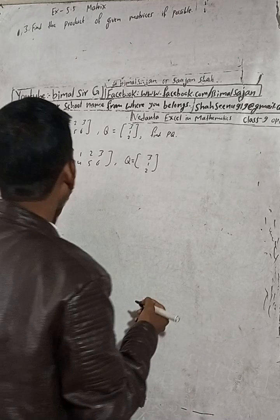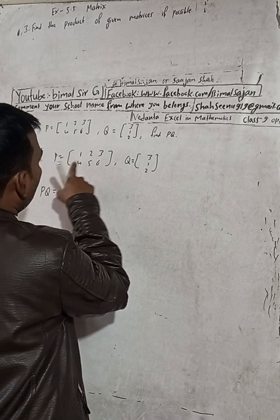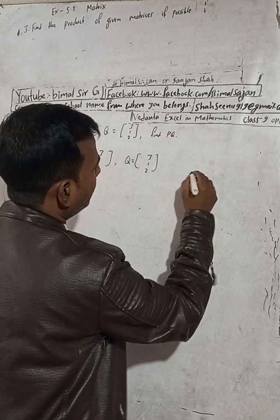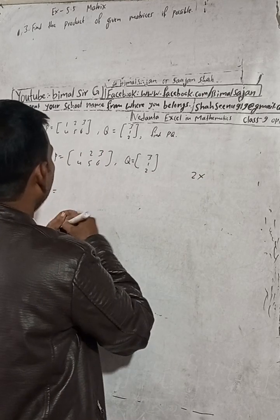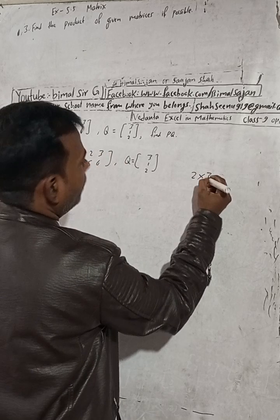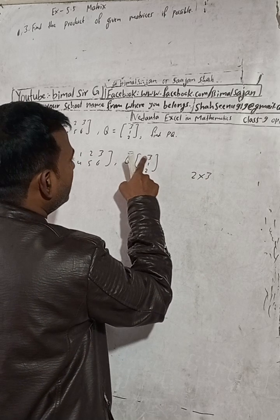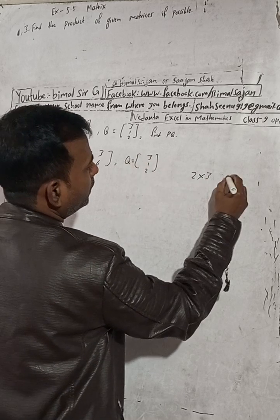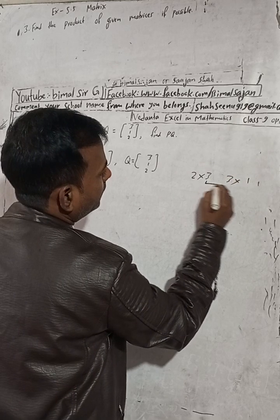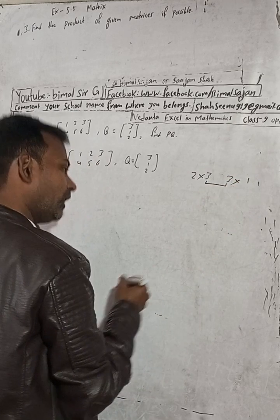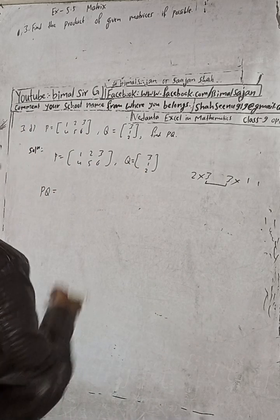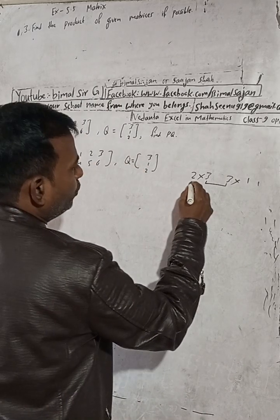To check, we look at P — it has two rows and three columns. In Q, there are three rows and one column. Since the number of columns in P equals the number of rows in Q — both are three — the product is possible.